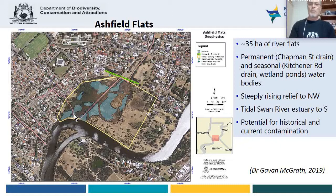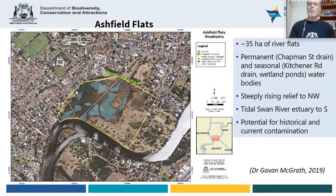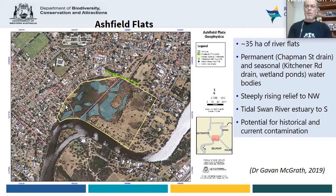The Kitchener Street drain is pretty seasonal, but there's water within the Chapman Street drain all the time. There's also a branch drain which enters the wetland system on the northwest of the site — just a minor drain, but it seems quite interesting in terms of its composition. Some people might like to have a look at that.